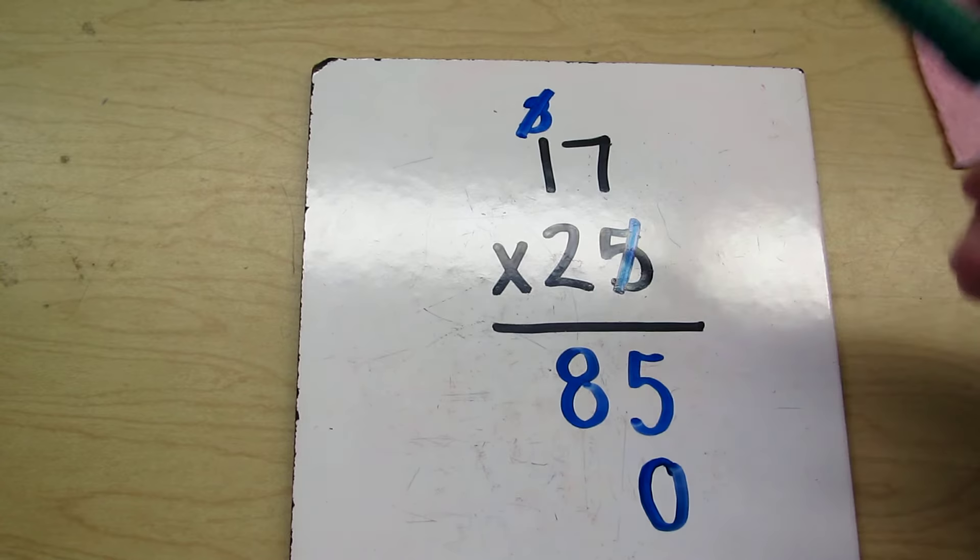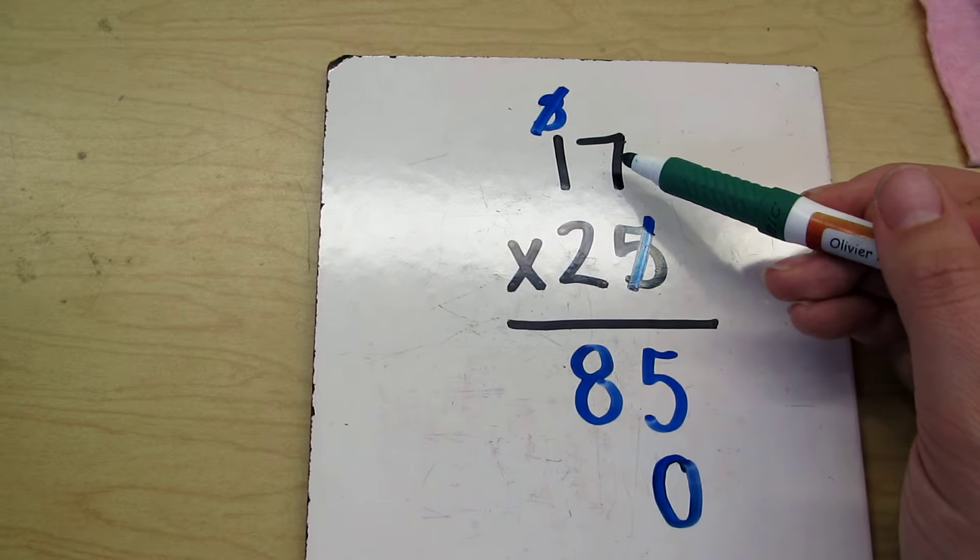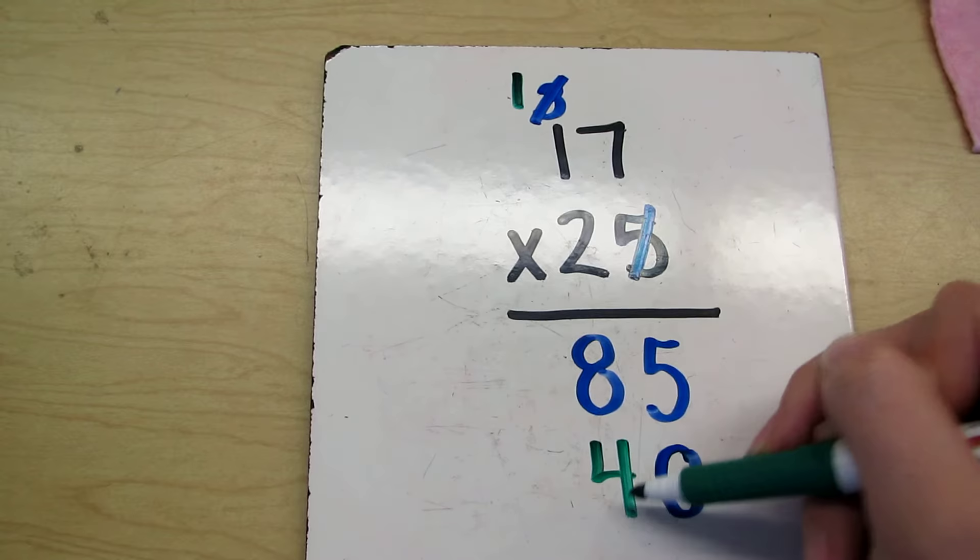So now at the bottom here, our tens place is the 2. So we're going to start multiplying with our 2. So first we have 2 times 7, which is 14. And again, the 1 goes up here, 1 and 4 for 14.